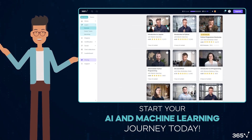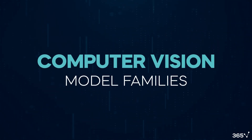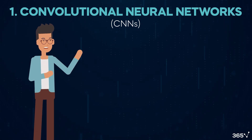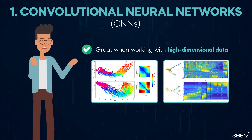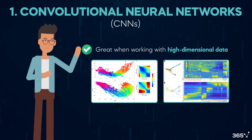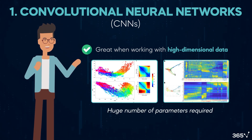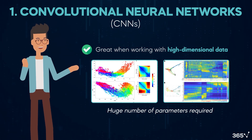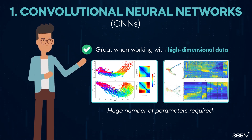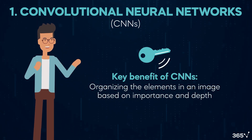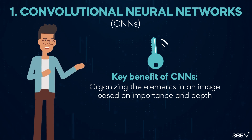Now let's get back to our discussion about computer vision. There are four main families of computer vision models. First, we have convolutional neural networks. CNNs are foundational for computer vision because they are great when working with high-dimensional data. In the early days, AI researchers used other types of neural networks for computer vision problems, but they struggled with high-dimensional image data due to the immense number of parameters required.